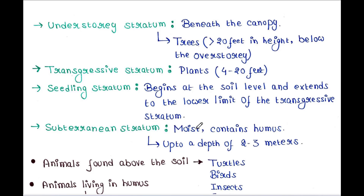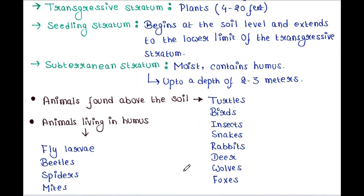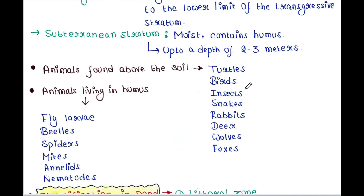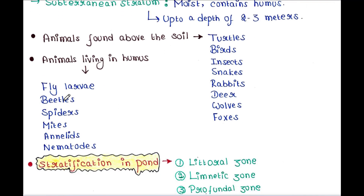Next is the subterranean stratum. This is the moist layer; it contains humus and goes up to a depth of 2 to 3 meters. Animals found above the soil include turtles, birds, insects, snakes, rabbits, deer, wolves, and foxes. Animals living in the humus include fly larvae, beetles, spiders, mites, annelids, and nematodes.